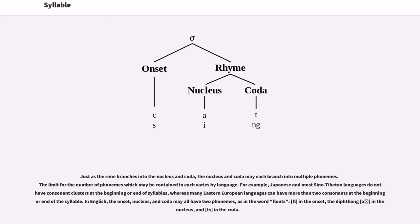Just as the rhyme branches into the nucleus and coda, the nucleus and coda may each branch into multiple phonemes. The limit for the number of phonemes which may be contained in each varies by language. For example, Japanese and most Sino-Tibetan languages do not have consonant clusters at the beginning or end of syllables, whereas many Eastern European languages can have more than two consonants at the beginning or end of the syllable.